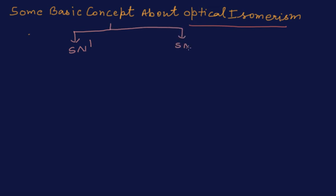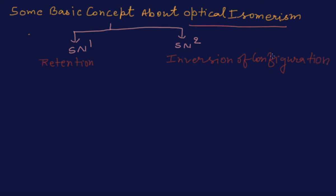In the SN1 reaction, we study retention, and in the SN2 reaction, we study the inversion of configuration. To understand this concept and how optical isomerism is related with this, we have to understand some basics.